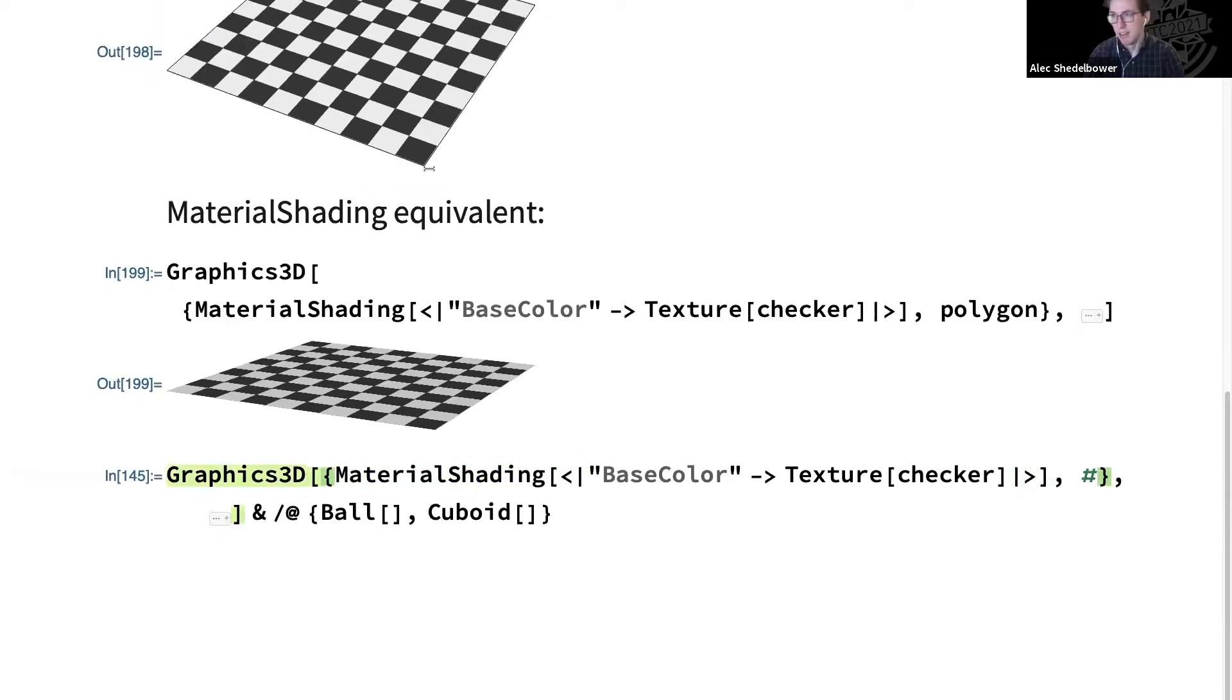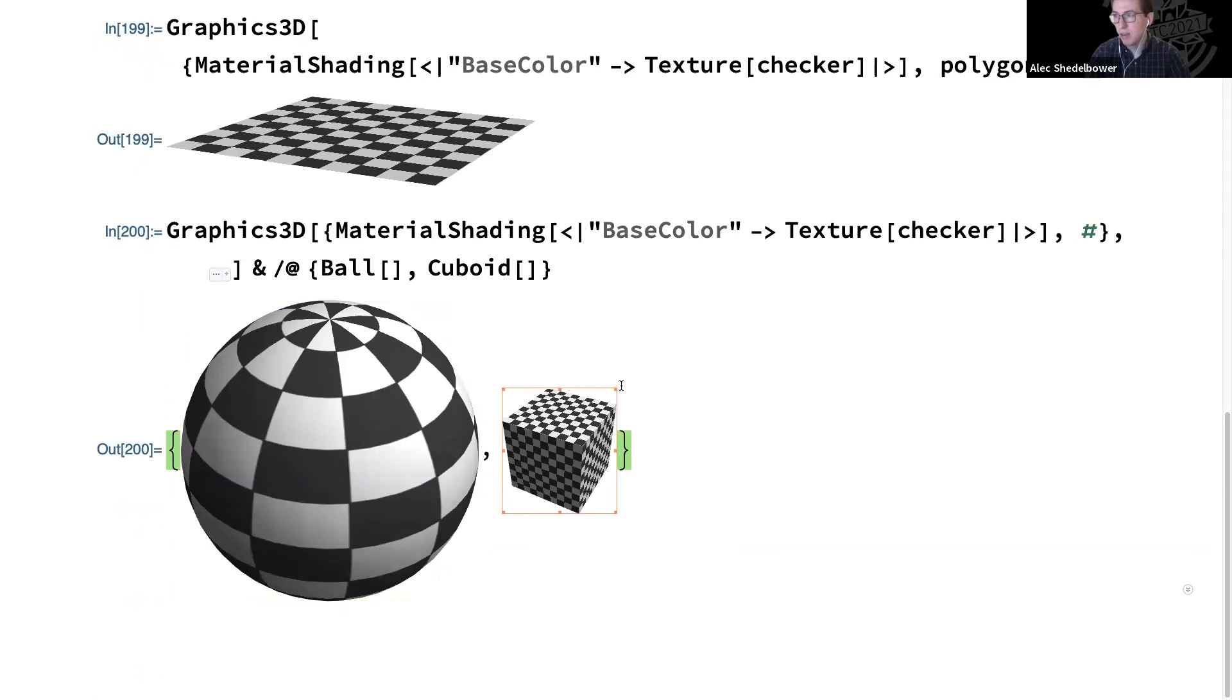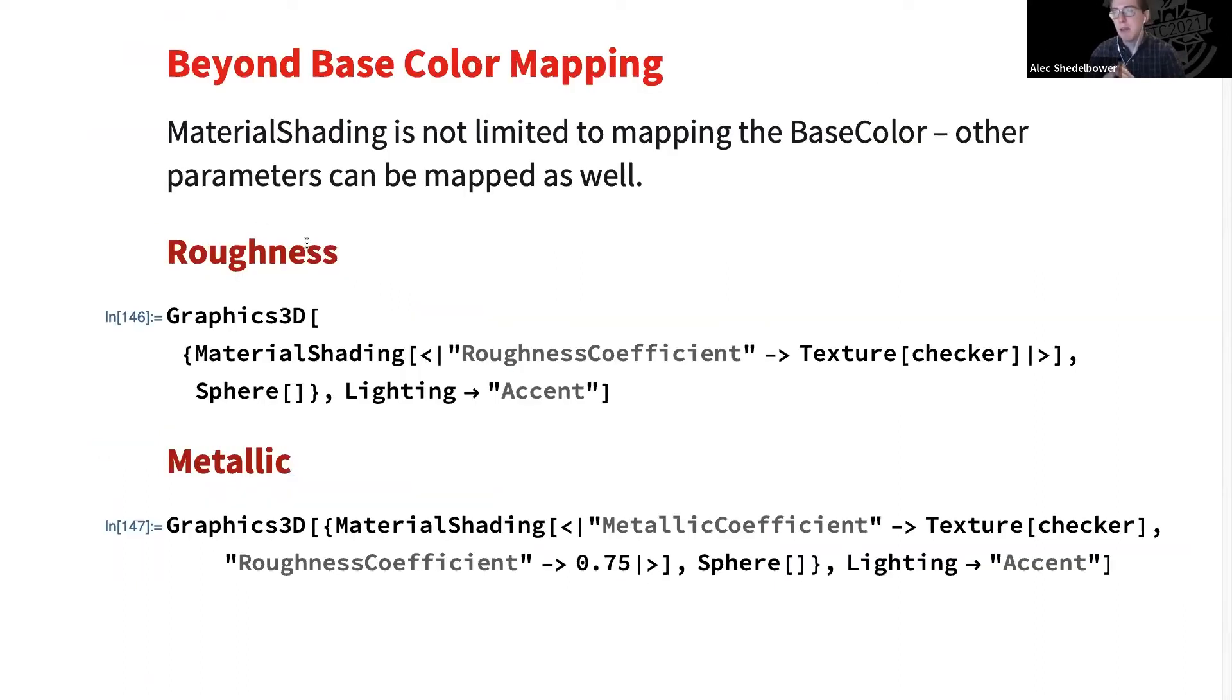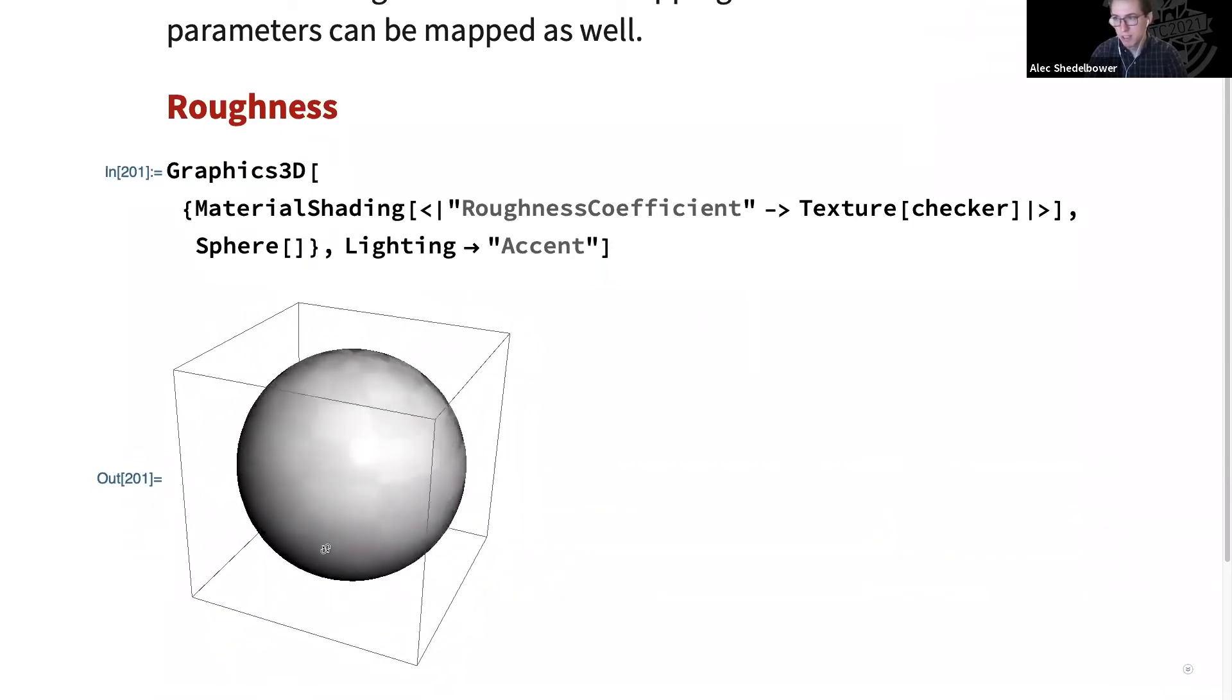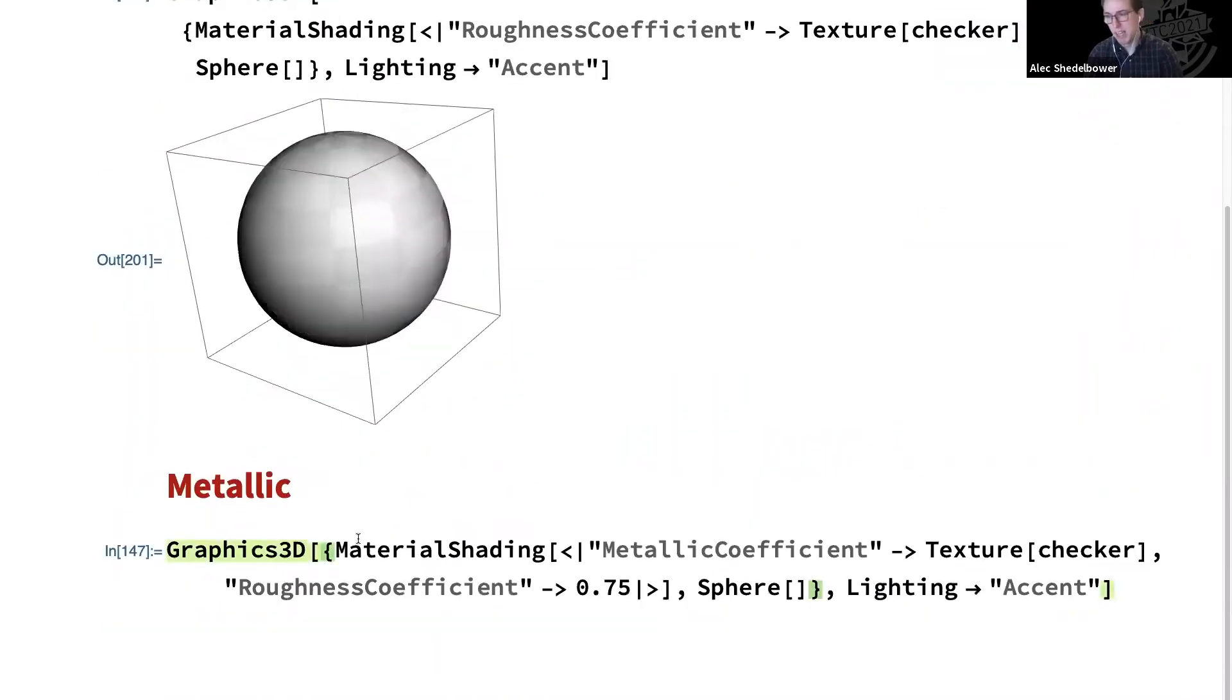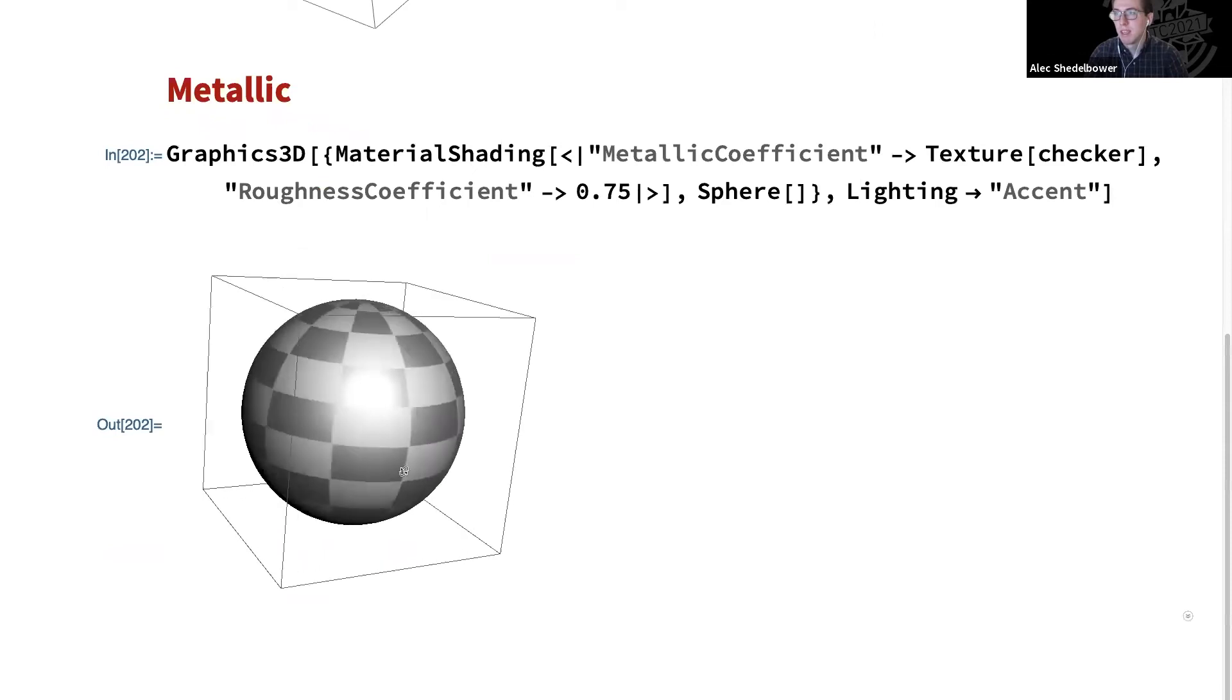As far as the texture mapping, some of our built-in primitives have kind of a default mapping to them. For example, the sphere here and our cuboid have a nice already included mapping. So you don't have to worry about it. Now the very neat thing about MaterialShading is that it's not limited to just mapping that base color. We can map a lot of other parameters as well. For example, using that same checker texture, we can have that correspond to roughness. So now every other square will be shiny and the rest will be very rough and diffuse. You can see that in the highlight here. Similarly, we can use that same checker texture for metallic. So now every other square is metal.